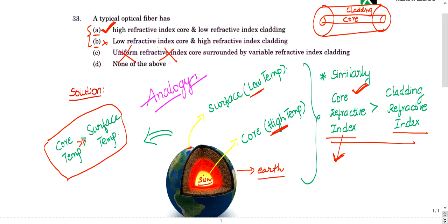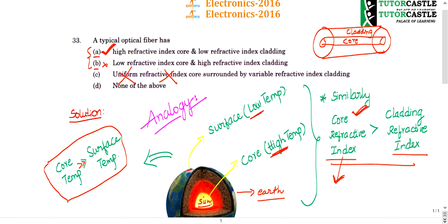In this way, it's an analogy. I'm not making you any rocket science here. I'm not doing any confusion with you. So, what I mean to say is, core will have higher temperature and surface temperature in case of Earth. Similarly, core refractive index will be greater when compared to cladding refractive index. You can see option A. Higher refractive index core, lower refractive index cladding. Why I said this analogy is, so that you will not make this a mistake.